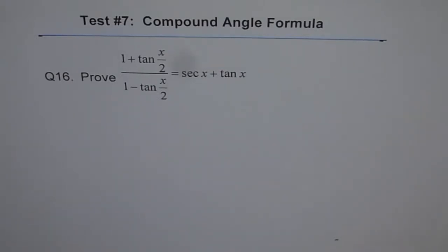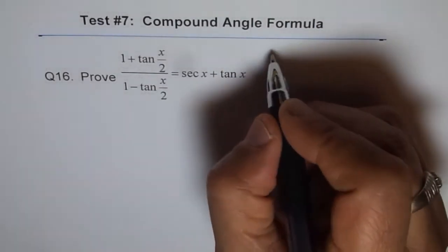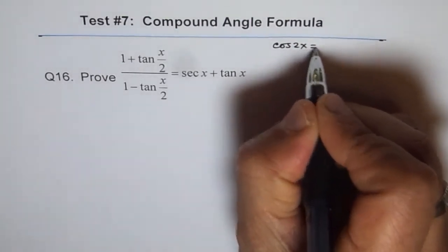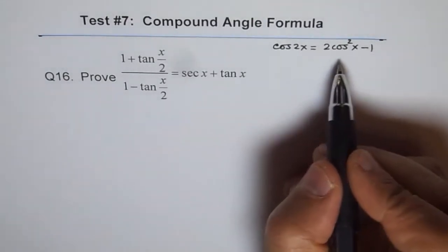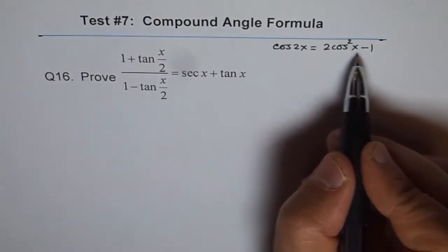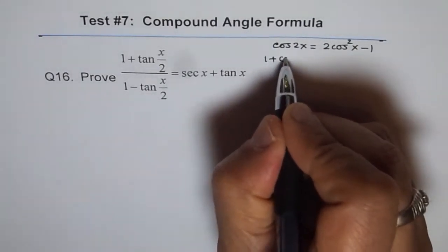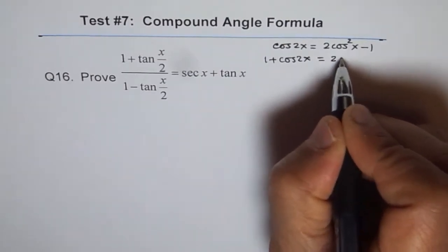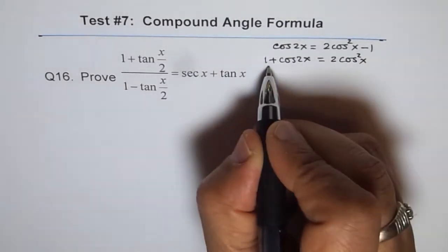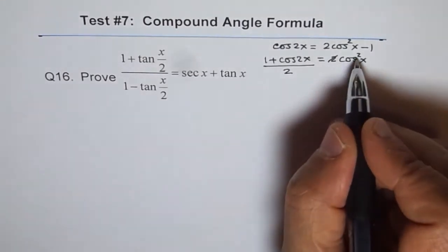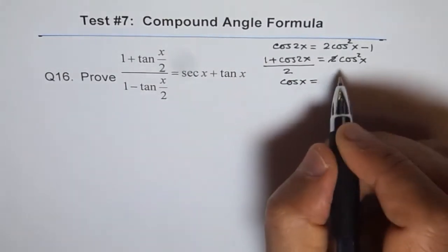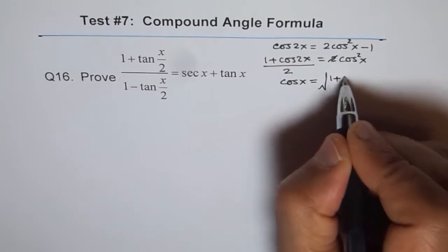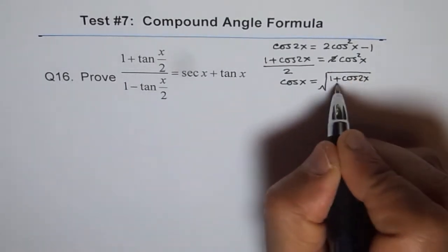Let me start with the double angle formula for those not very conversant with it. cos 2x can be written as 2cos²x − 1. From here we get the half angle formulas. We take 1 to the other side: 1 + cos 2x = 2cos²x. Dividing by 2 and taking the square root, we get cos x = √((1 + cos 2x) / 2).